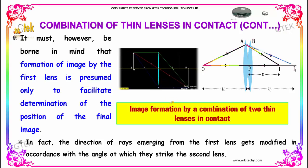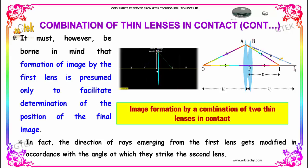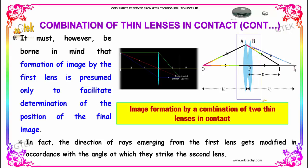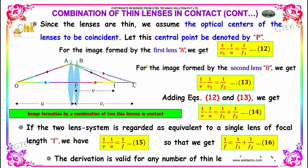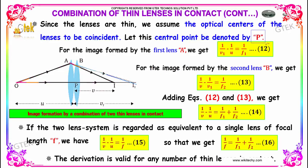In fact, the direction of rays emerging from the first lens gets modified in accordance with the angle at which they strike the second lens. Since the lenses are thin, we assume the optical centers of the lenses to be coincident. Let this central point be denoted by P.